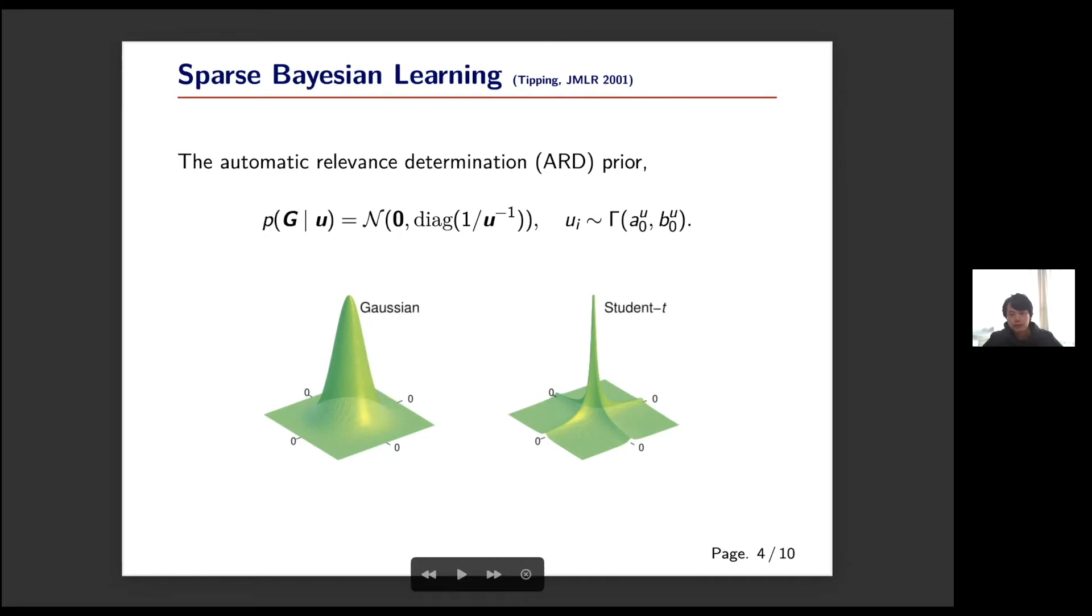Intuitively, what the ARD prior is doing is putting very massive density on small values, so that during the training process the irrelevant factors tend to be small values and we can get very sparse estimates.